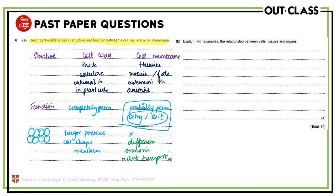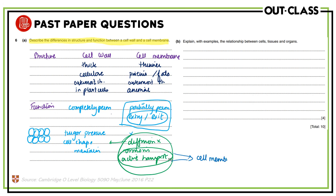The cell membrane, on the other hand, does not maintain turgor pressure or shape; it is responsible for the entry and exit of substances. An important aspect of the cell membrane is that it allows certain movements through it: diffusion, osmosis, and active transport. Diffusion can also occur through the cell wall, but osmosis and active transport definitely require a cell membrane. These processes will be discussed in more detail in the next unit.